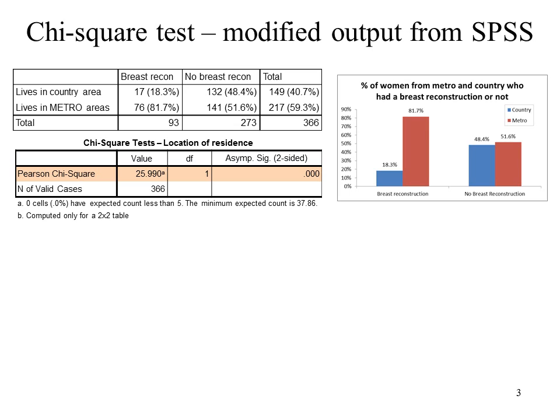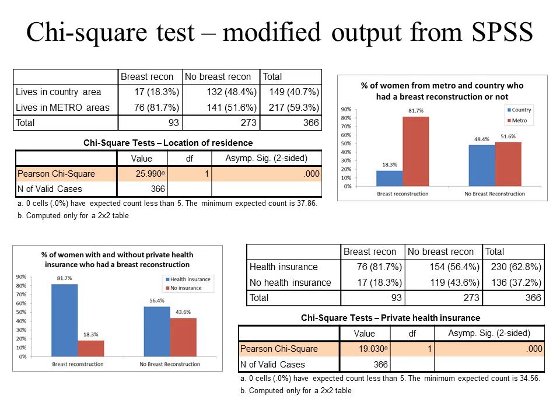You'll learn more about p-values in the actual biostatistics tutorial. Here's another example: does having health insurance affect whether you have a breast reconstruction within 1.8 years after diagnosis? There's the 2x2 table of breast reconstruction and health insurance, the chi-squared tests, the p-value and actual chi-squared value, and the graph.